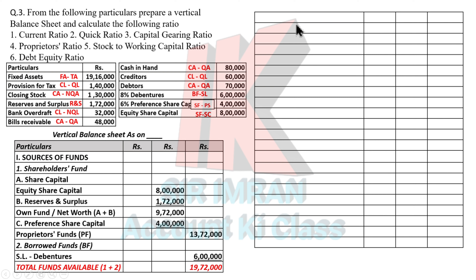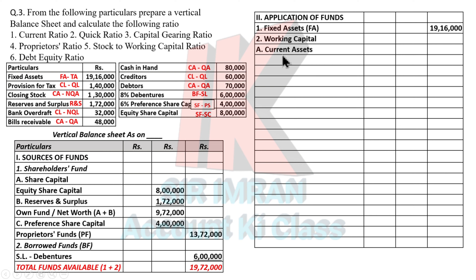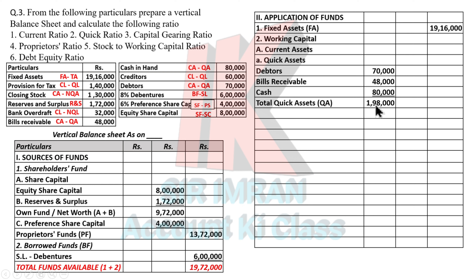In the vertical format, assets are called application of fund — fund is collected from owners or outsiders and then applied to our assets. Under application of fund there are two parts: fixed assets and working capital. Fixed assets: 19 lakh 16,000. Under working capital there are current assets and current liabilities — we deduct one from the other to get working capital. Starting with current assets, which have two headings: quick and non-quick. Quick assets include: debtors 70,000, bill receivable 48,000, cash in hand 80,000. Adding these gives total quick assets: 1 lakh 98,000.